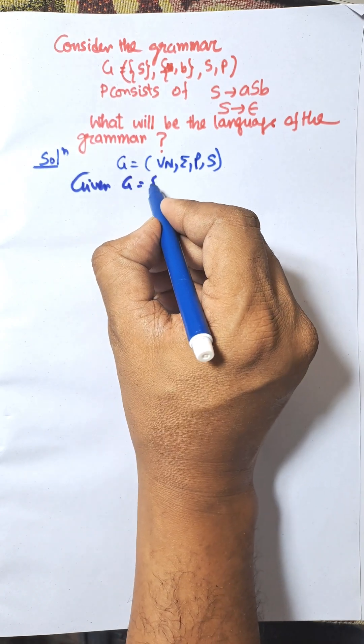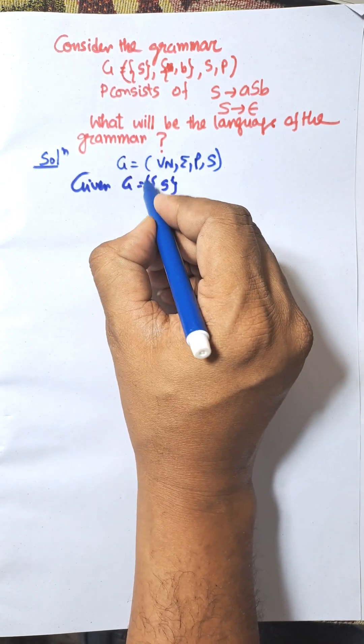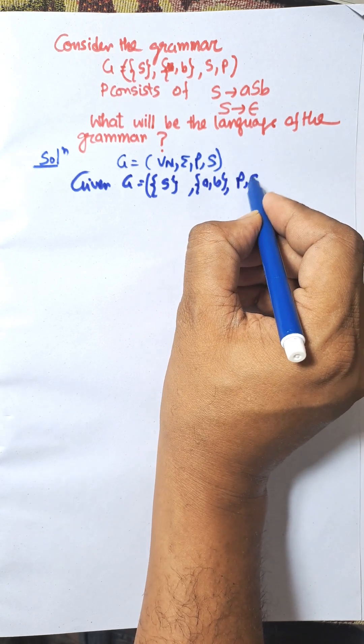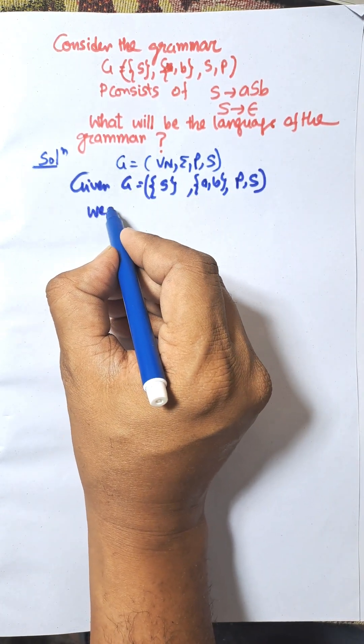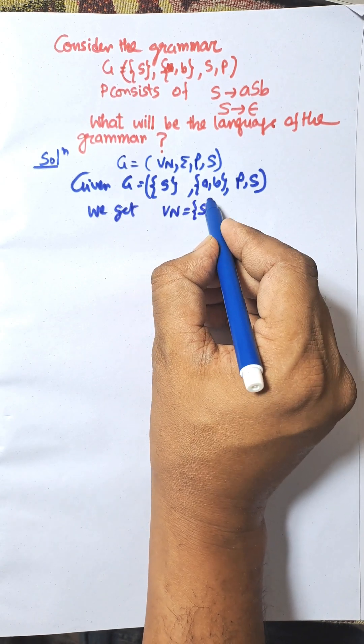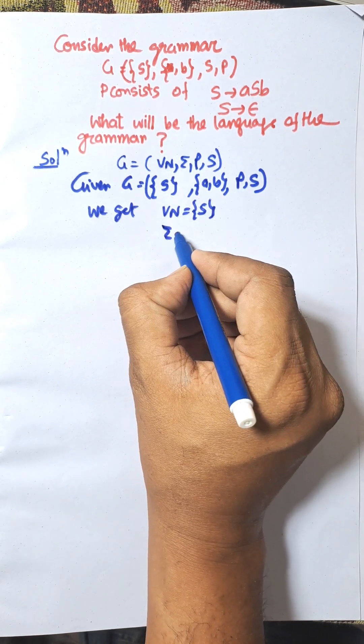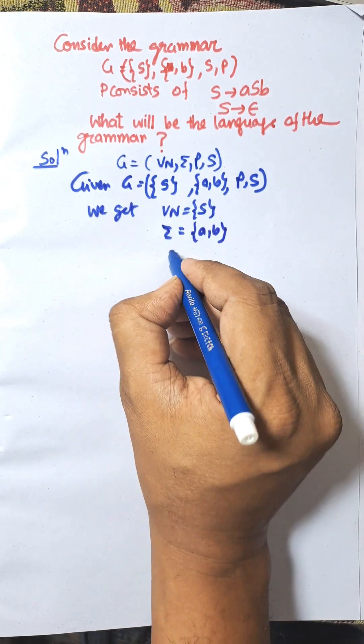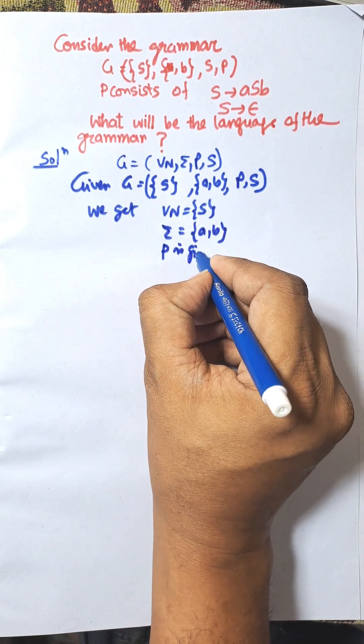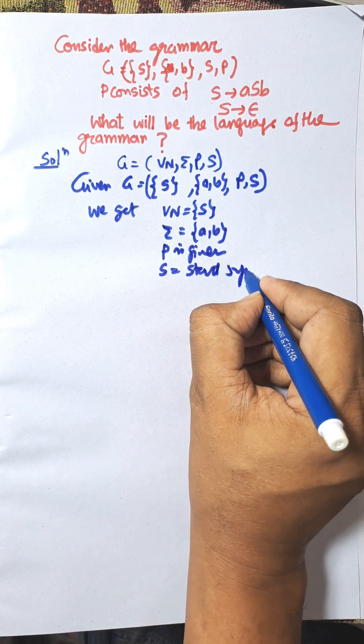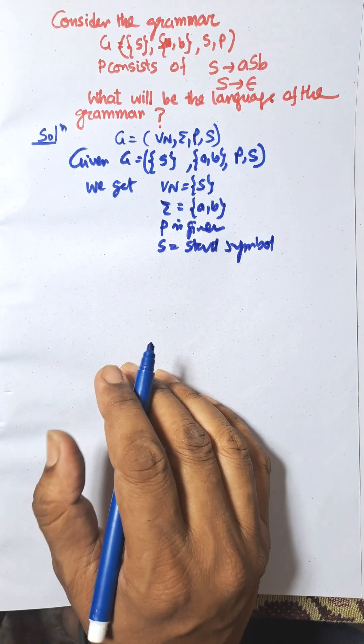Given G equals (S, a, b, P, S), comparing one and two we get VN equals {S}, that is only the start symbol. Σ, the input alphabet, equals {a, b}. P is given above and S is the start symbol. Now we need to find the language of the grammar.